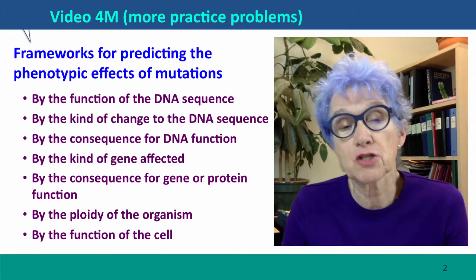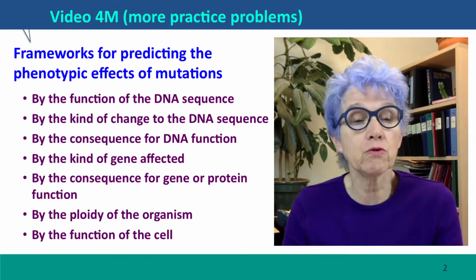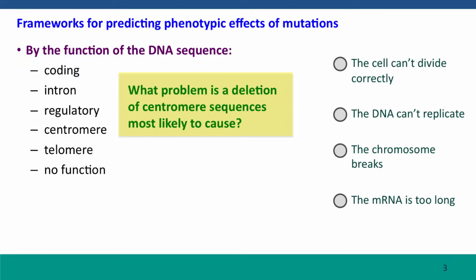In the slides that follow, you will see first a particular framework to think about. In this first slide, the framework is the function of the DNA sequence. Within that, the issues are whether or not it's coding, whether it's an intron, whether it's regulatory, whether it's a centromere or telomere sequence, or a sequence that has no function at all. Thinking about these issues is one way to think about the consequences of a mutation.